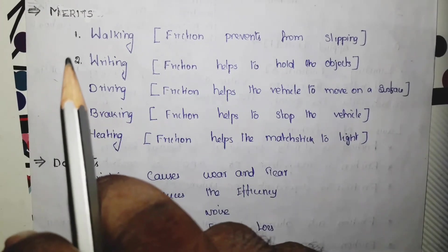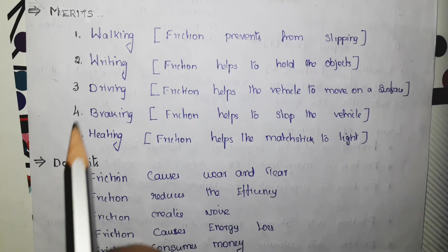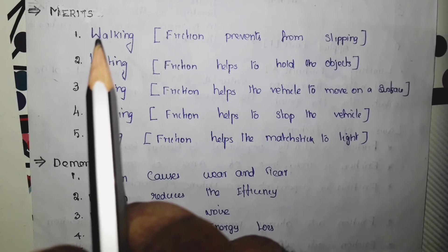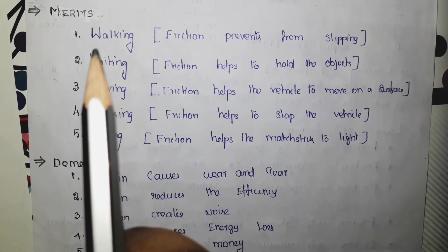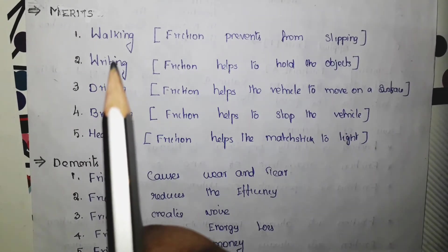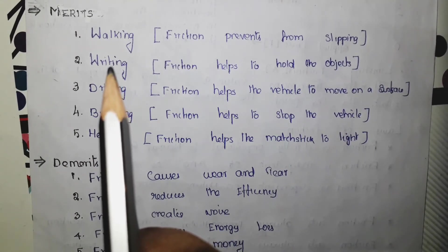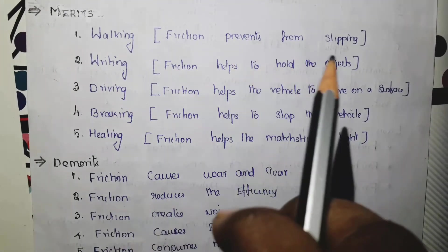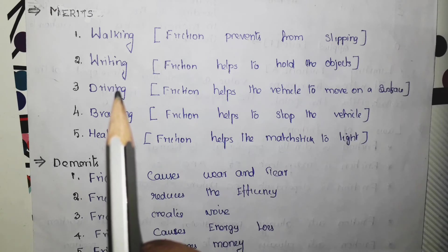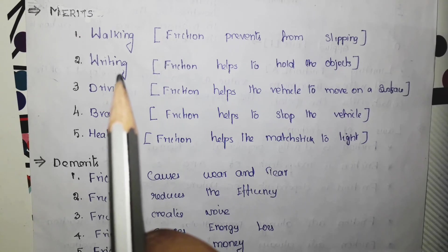Now, the second topic is the merits and demerits of friction. Though friction is an opposing force, it helps in many ways in our life. I have highlighted five important topics. The first one is walking. When we walk, there should be grip between our feet and the floor. And that grip is given by the friction. Otherwise, we have slipping. The next one is writing. Friction helps us to hold any object, pen or pencil or anything.